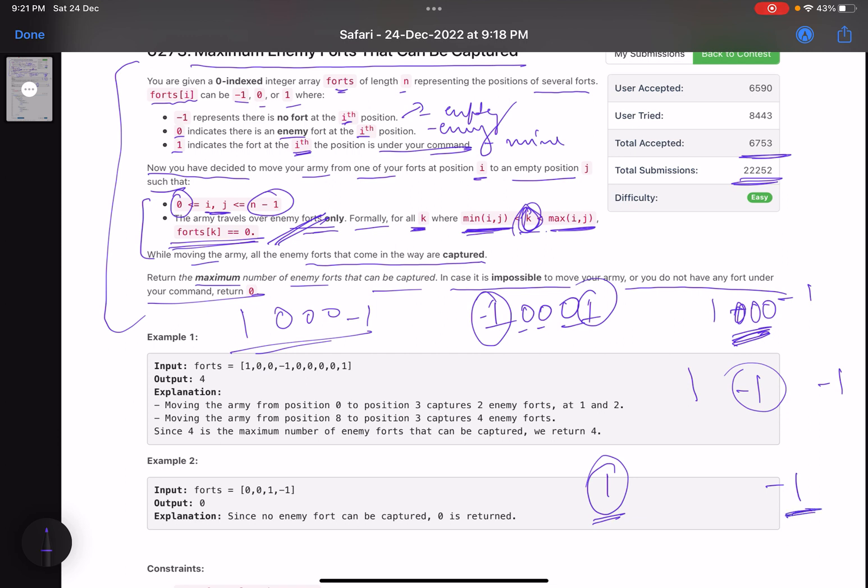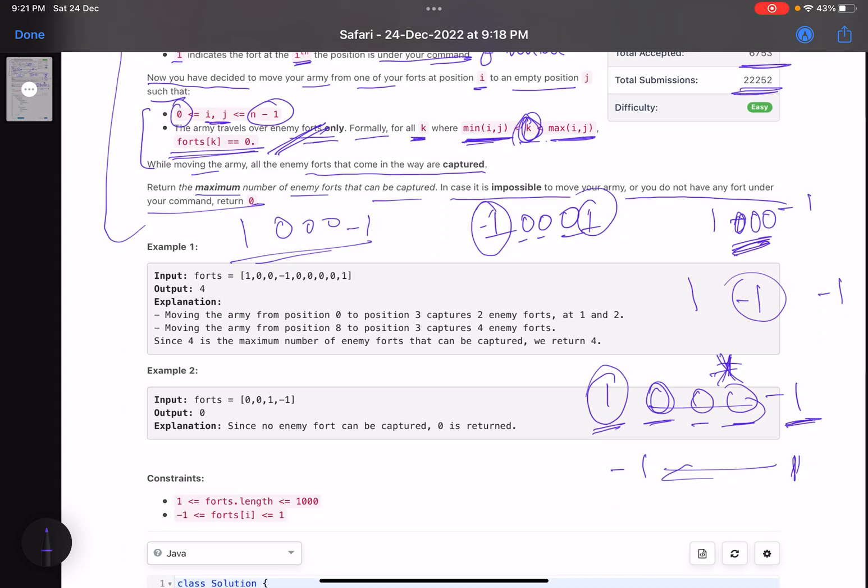You want to move your fort from one of your positions to an empty position. -1 can be here or 1 can be here as well, so you can move either in this direction or in this direction. In the middle when you move, you can only have enemy forts. Even if there is a single -1 or 1 here, then this path is not valid.